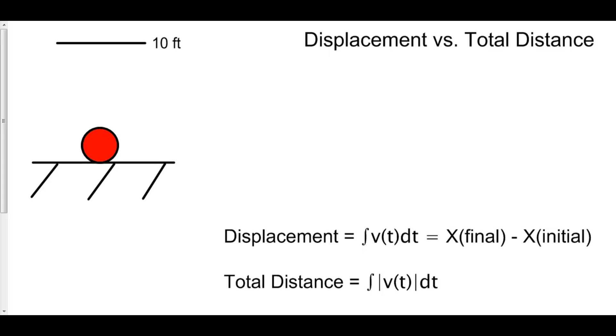What is the difference between displacement and total distance? To answer this, we are going to look at a ball bouncing up to ten feet and back down to the floor. The ball is going to start on the floor at height zero, bounce up to ten feet, and then come back down to the floor.